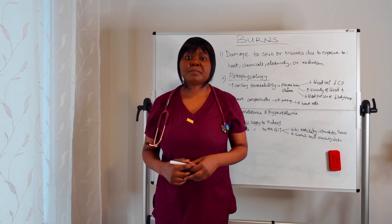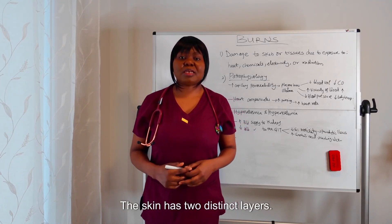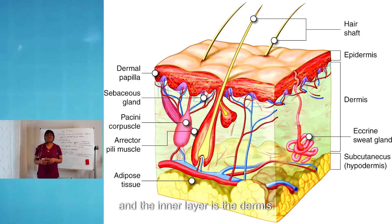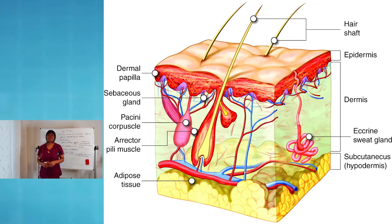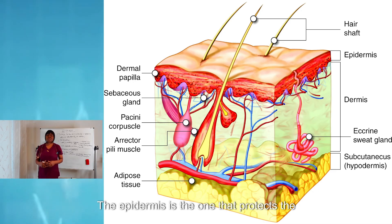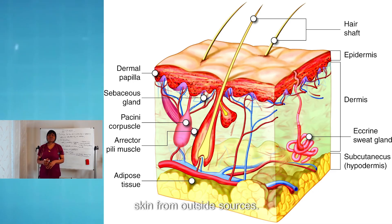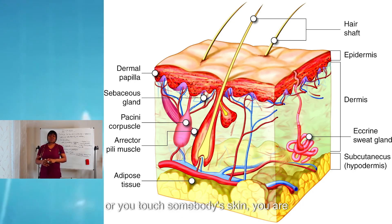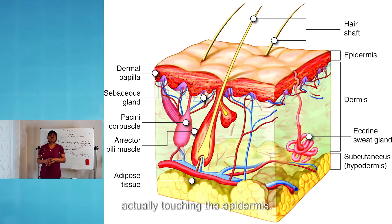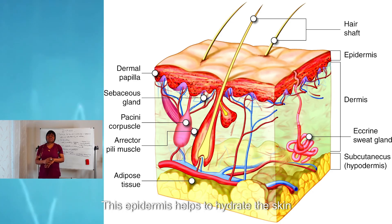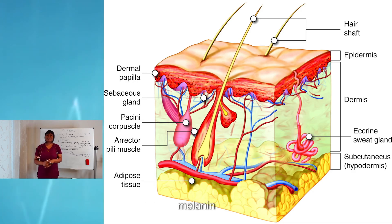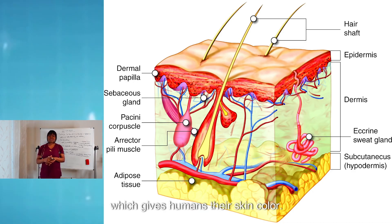Let's look at the skin. The skin has two distinct layers. The outer layer is the epidermis and the inner layer is the dermis. The epidermis is the one that protects the skin from outside sources. Generally, when you are looking at somebody or you touch somebody's skin, you are actually touching the epidermis. This epidermis helps to hydrate the skin and it contains melanocytes and secretes melanin, which gives humans their skin color.